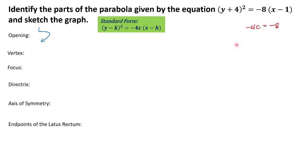And for the vertex, again, this would be at h, k. Here, h is 1 and k is negative 4.